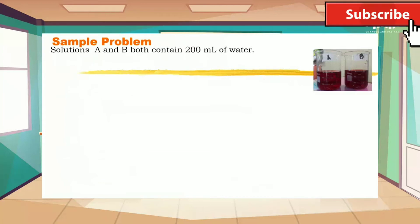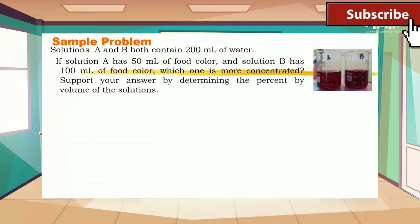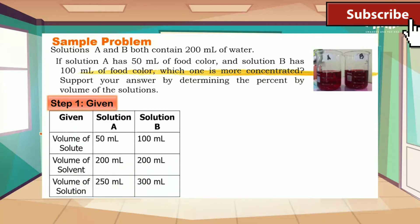For example, solutions A and B both contain 200 ml of water. If solution A has 50 ml of food color and solution B has 100 ml of food color, which one is more concentrated? Support your answer by determining the percent by volume of the solutions. In step one, we have here the given: the volume of solute, volume of solvent, and the volume of solution of solution A and solution B.